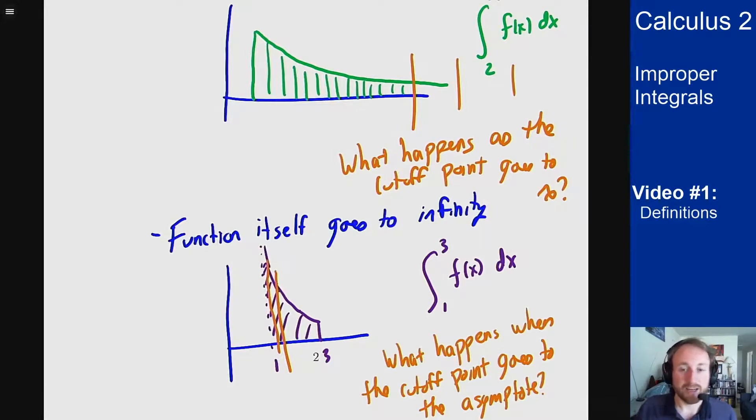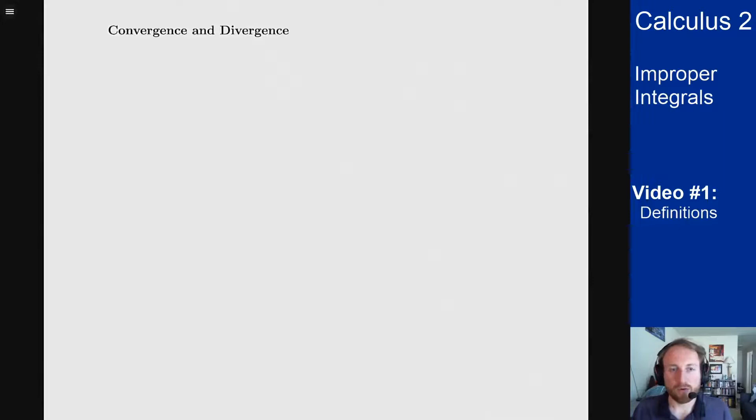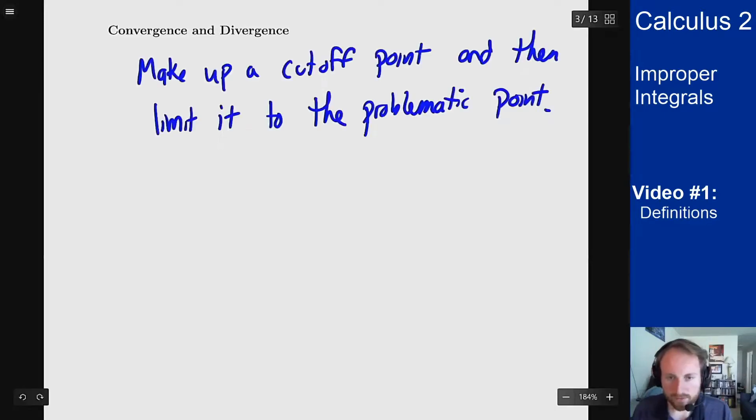In both cases, the idea here is basically the same. I have a problem with this integral. Let me get rid of it and make it a good integral and then limit my parameter point to this problematic area and see what happens. And this leads us to talk about what we mean by convergence or divergence of integrals. We'll talk specifically about the two different types in future videos, but for now we'll talk about it in general. The general idea is make a cutoff point and then limit the cutoff point to where there's a problem. This problematic point being either infinity or an asymptote of the function.